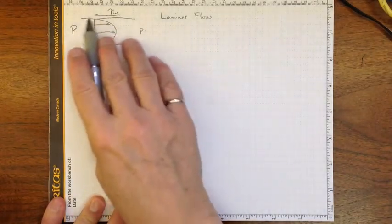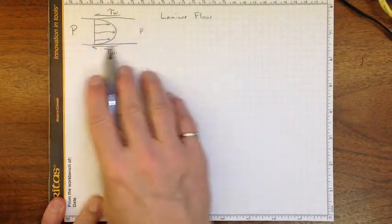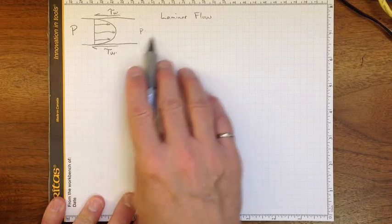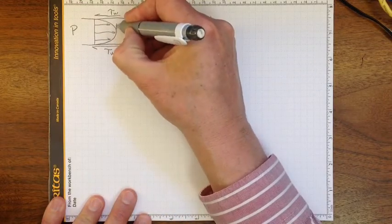If we have a flow with a parabolic profile like this in a pipe, a round pipe, we'd like to know the interrelationship between the maximum velocity,